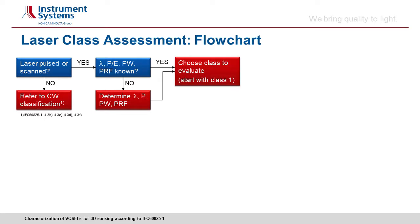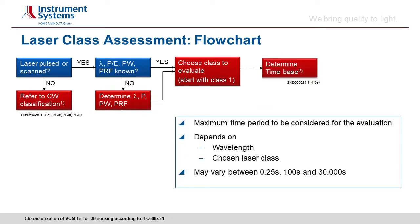Now that we have determined the basic parameters, it is time to choose the laser class we want to evaluate. In our case it is straightforward — we want to use the laser in public, so it is laser class 1. The next step is to determine the time base, which gives the maximum time period to consider for the evaluation. It depends on the wavelength and the chosen laser class.